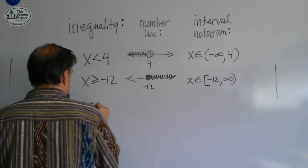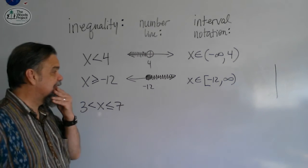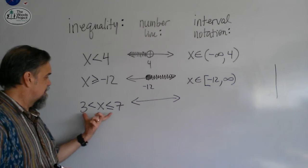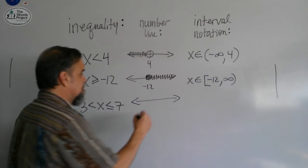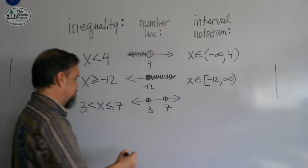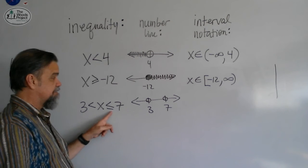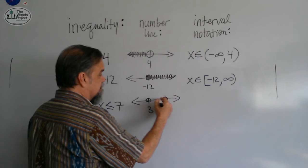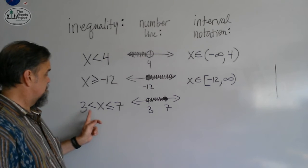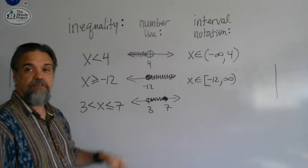3 is less than x, which is less than or equal to 7. Well, here's my number line, and this time I've got two numbers to put on the number line, 3 and 7, so I'll put a 3 here and a 7 here, and I'll put little circles on each of them. The 3 is not included in my solution set, it's on the outside. 7 is included, so I'm going to shade in the 7, and I'm going to shade in in between there. So, 3 is less than x, which is less than or equal to 7, is written like this on our number line.